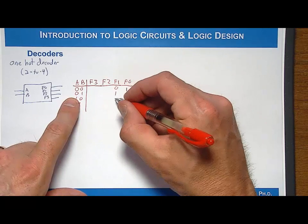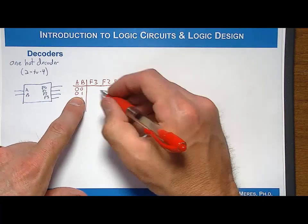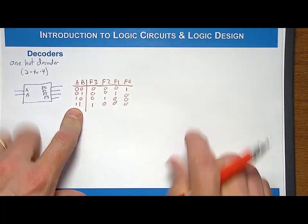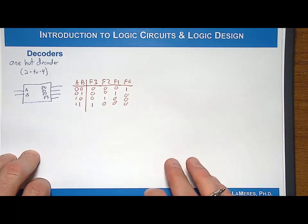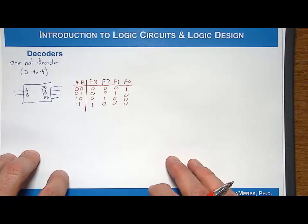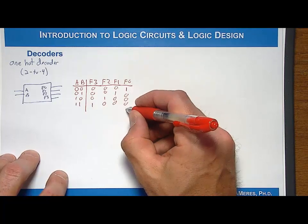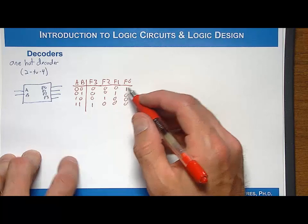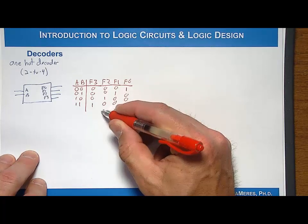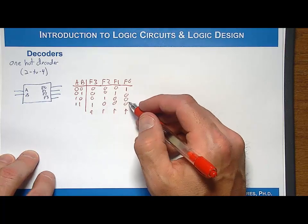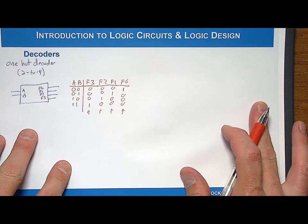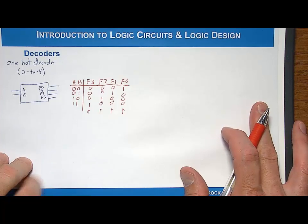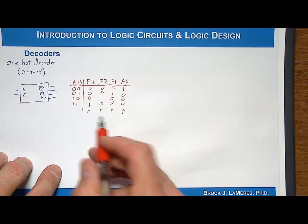F1 is going to assert for input code 01, but unasserted for all the rest. F2 will be asserted for 10, and then finally, F3 will be asserted for only 11. We're going to design this using our classical combinational logic design approach. Remember that a logic expression, when we write a logic expression for F0, it only has a scalar output, a one-bit output. That means you actually have to write four logic expressions for this functionality, one for each of the outputs. You can go back later and try to optimize and find common terms amongst the output logic expressions that you can share.